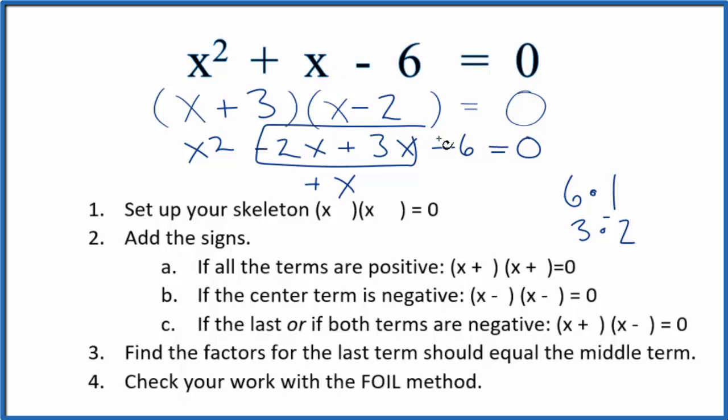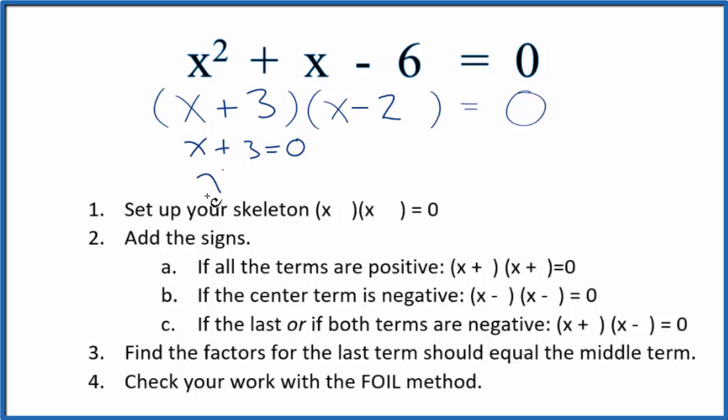Now we should find the solutions that will make this equation equal to 0. We could say x + 3 = 0. Subtract 3 from both sides, x = -3. Over here, x - 2 = 0. Add 2 to both sides to get x = 2.